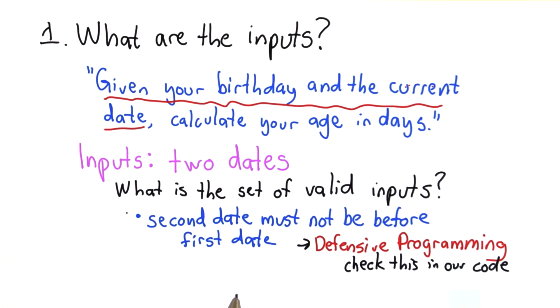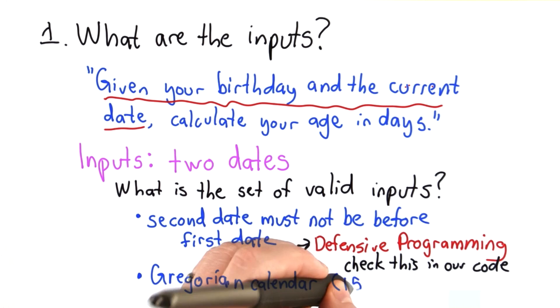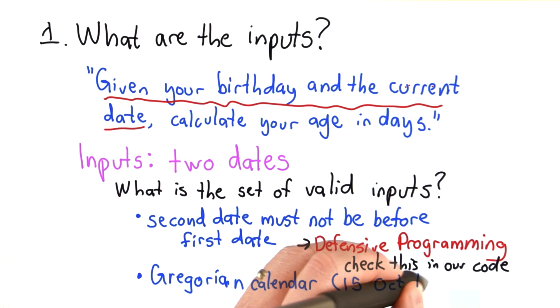The other assumption we might want is something about the range of dates. Calendars are very complicated, and they've changed over history. We're going to require that the dates are valid dates in the Gregorian calendar, which started in October 1582. Our code will probably work for dates outside this range, but it might not get exactly the right answer, since when the calendar changed, the meaning of dates changed.